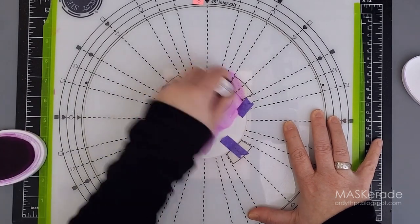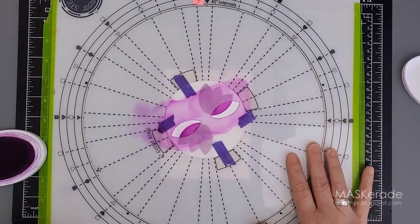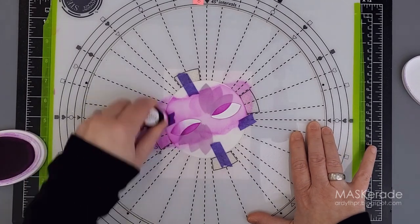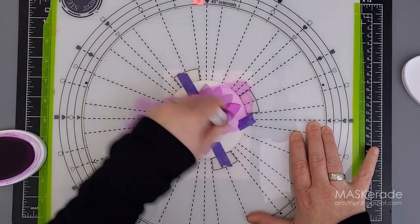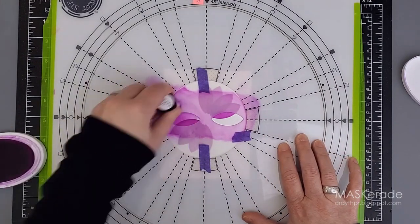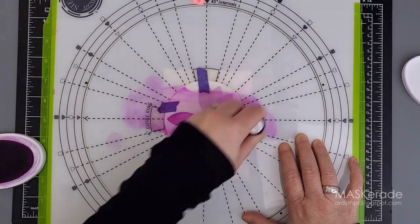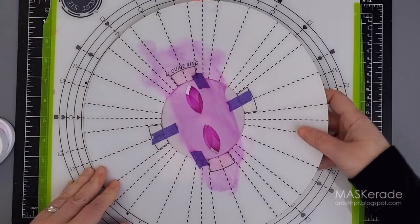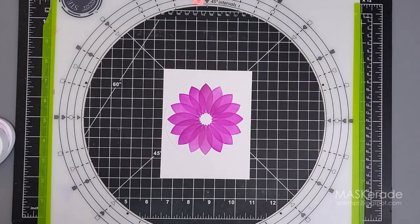I'm using the small Altenew blending tools that are sold in packs of four, but any ink blending tools you have will work. For my ink blending, I like to use brushes rather than sponges through stencils since I think they hold up better with less damage. After a full rotation I lift the stencil and I've got this pretty flower with overlapping petals.